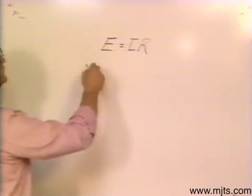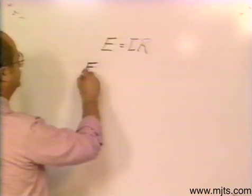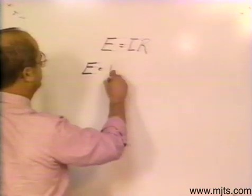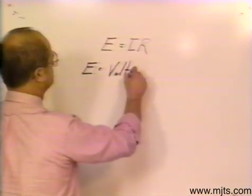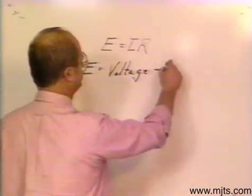Those three variables, E represents voltage or electromotive force, and the unit of measure is a volt.